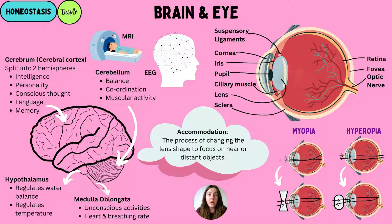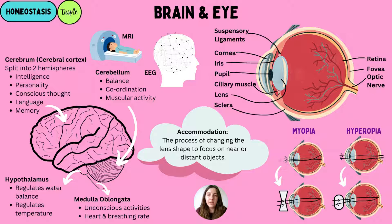The main difference between rods and cones is to do with light intensity. Rods are specifically useful in low light conditions, whereas cones are better in more intense light conditions — they're photoreceptors dependent on the type of light intensity. At the back of the eye we also have the optic nerve, which sends information through electrical impulses to the CNS. To help us focus, we have ciliary muscles that control the shape of the lens, and suspensory ligaments that attach the ciliary muscles to the lens.